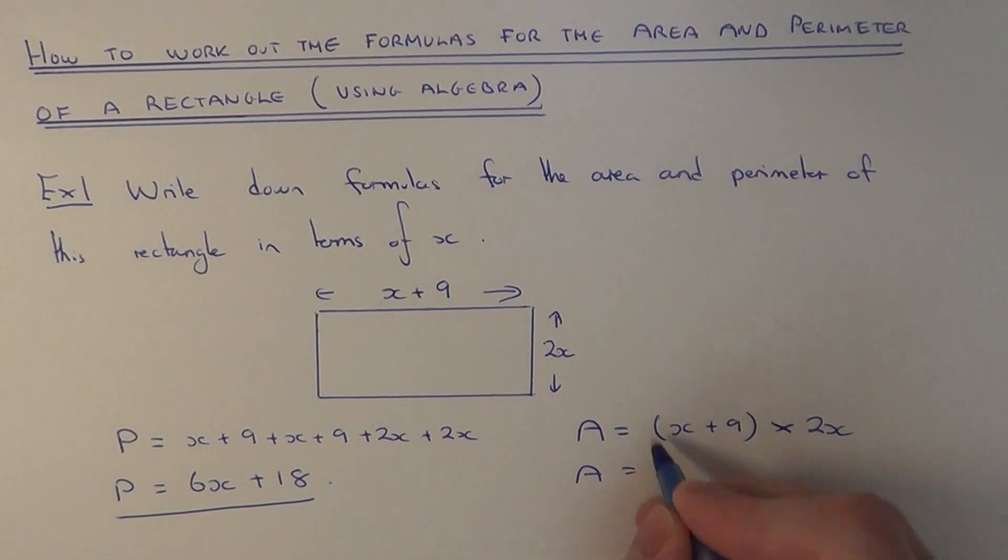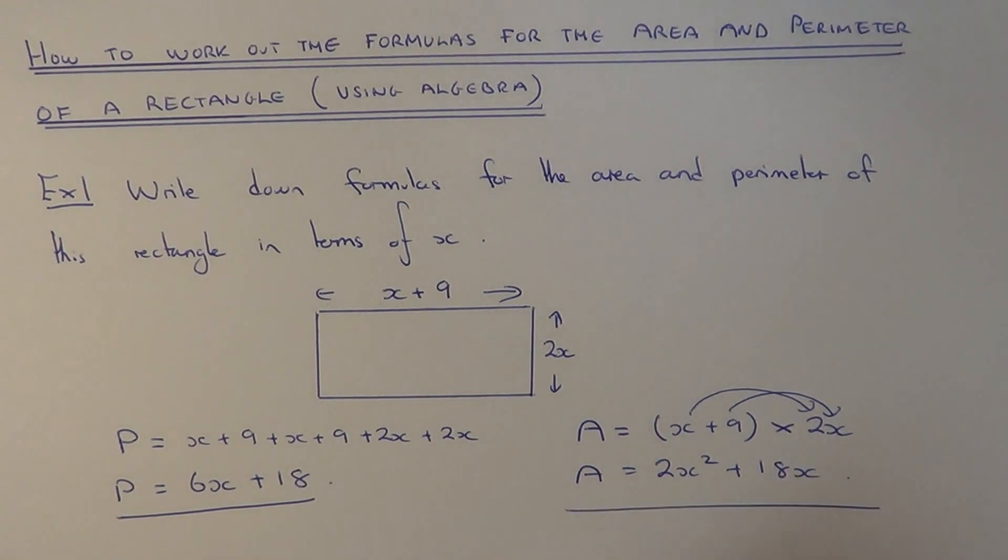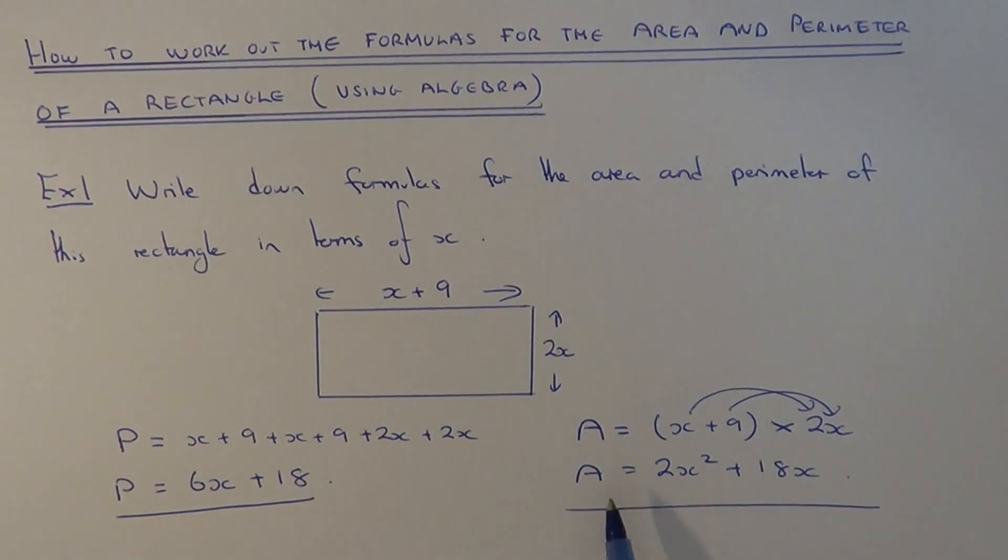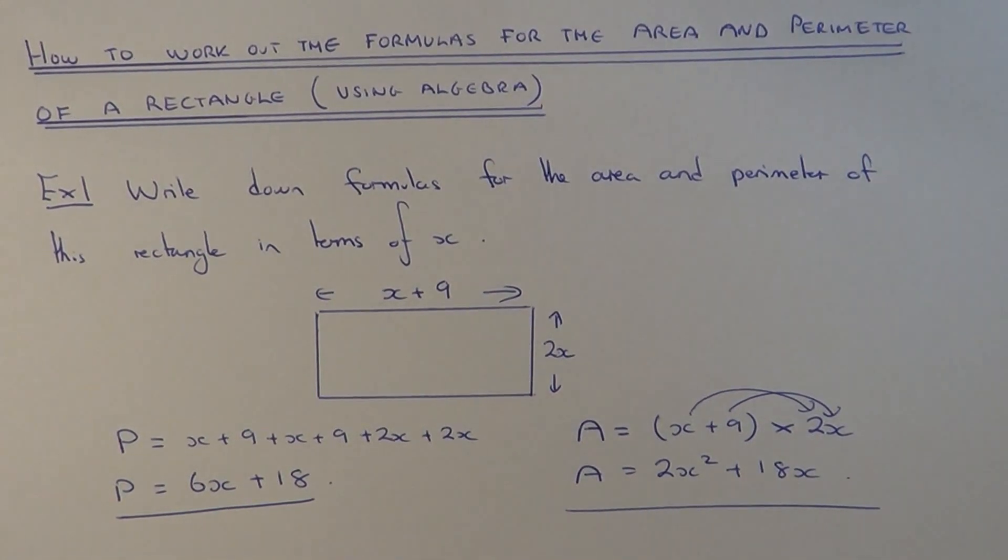So we just now need to simplify this by expanding the bracket. So x times 2x is 2x squared and 9 times 2x is 18x. So our final answer for the area is a equals 2x squared plus 18x.